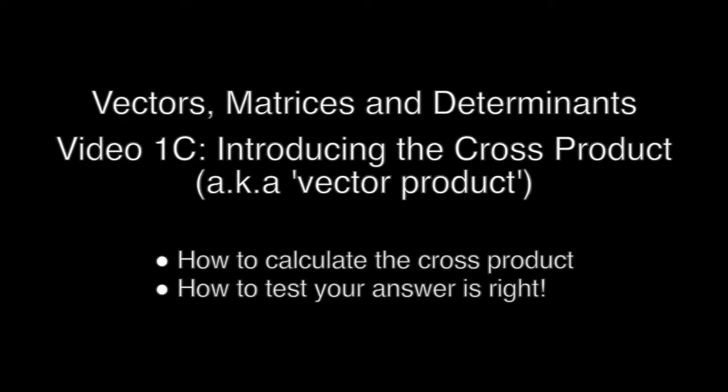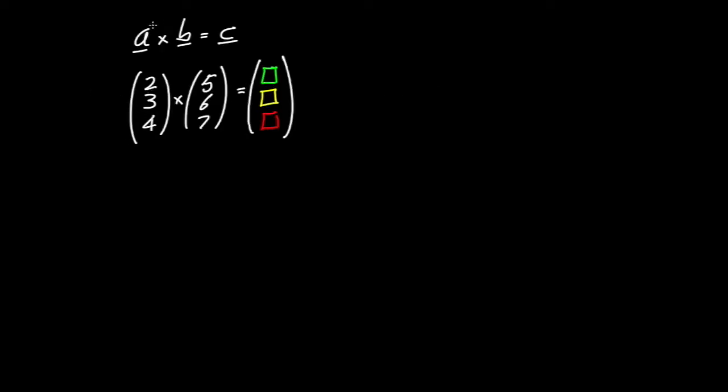In this video we're going to see how to calculate something called the cross product of two vectors. It's also called the vector product because the output is a new vector and we'll see how to test that the answer is correct. So here I've written A cross B is equal to C and notice that the symbol for the cross product is just the multiplication symbol that you're familiar with from basic arithmetic.